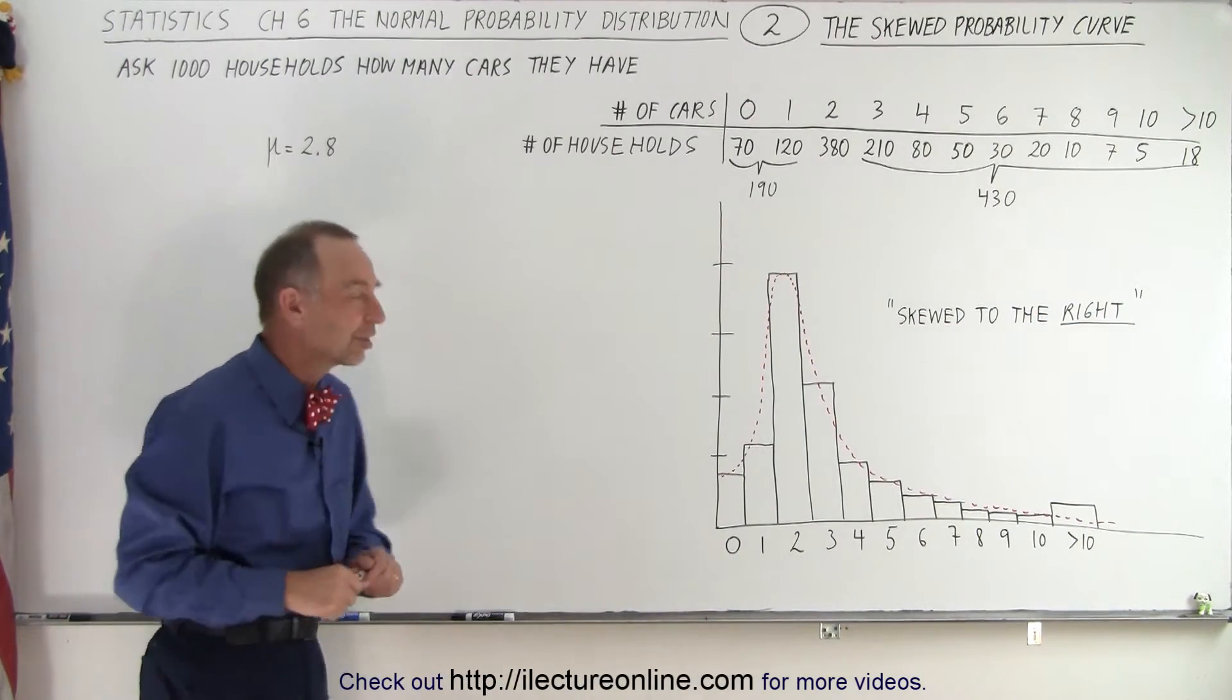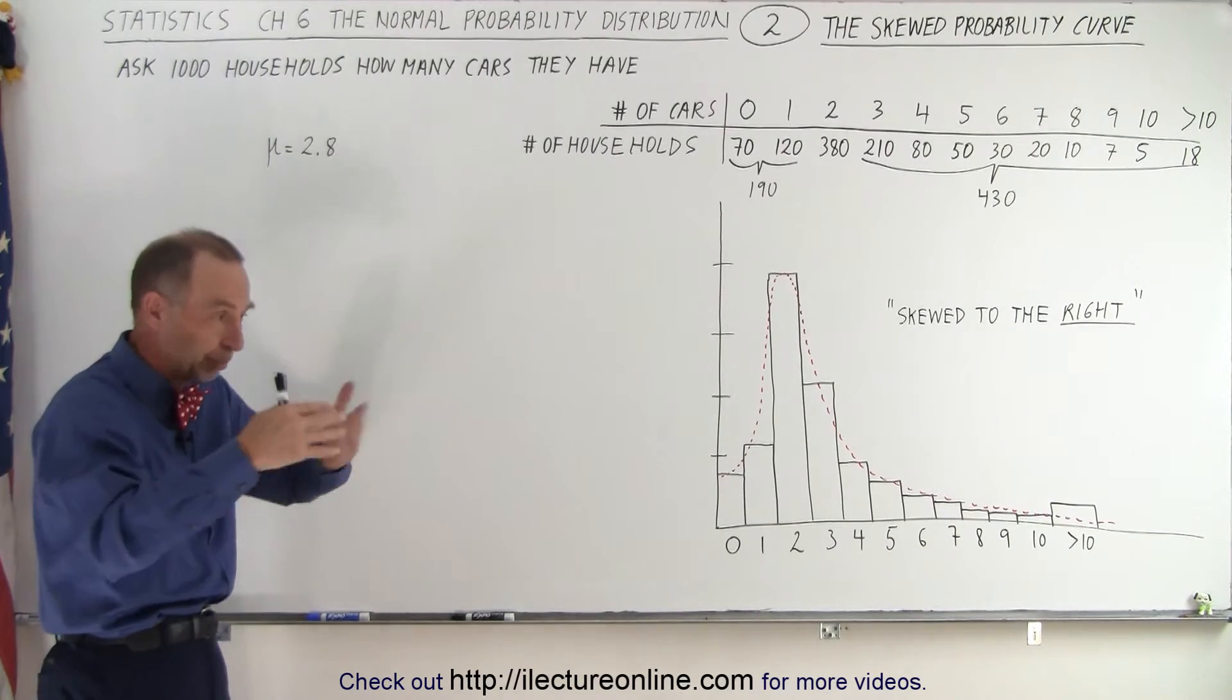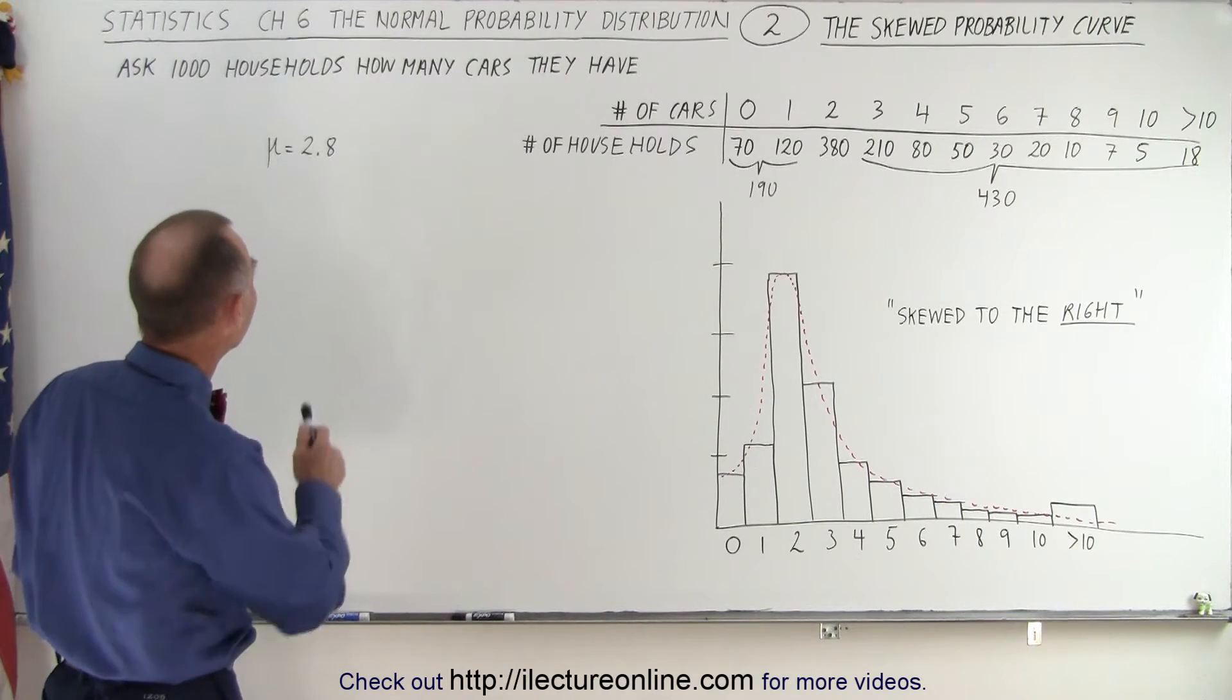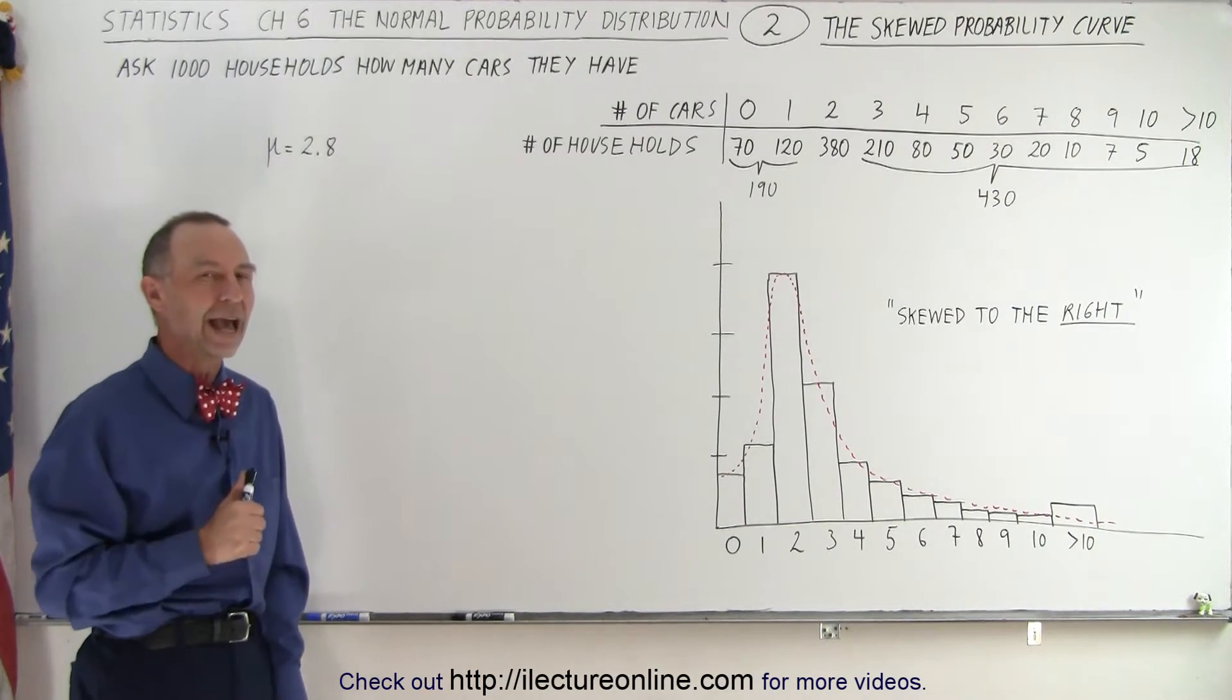So let's see what the numbers here represent. We're asking 1,000 households, presumably at random. We just pick them at random out of the phone book. Well, we don't use phone books anymore, of course. We pick a random 1,000 households, and we ask how many cars they have.